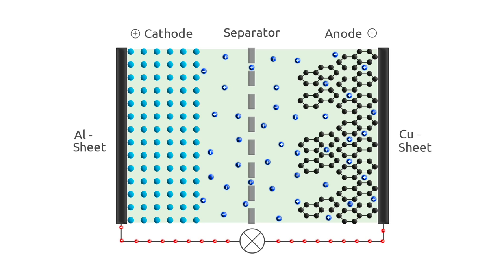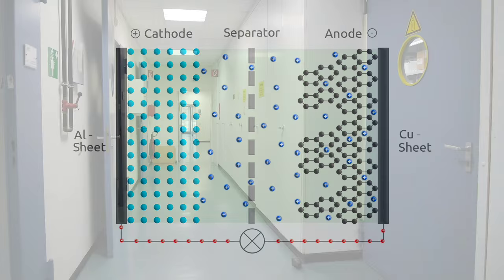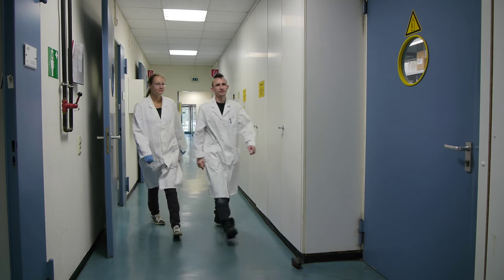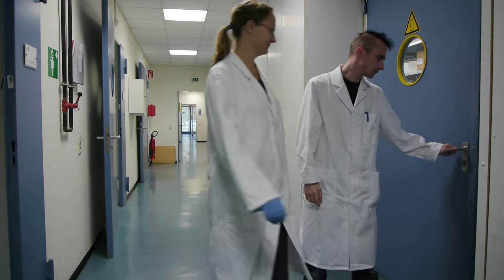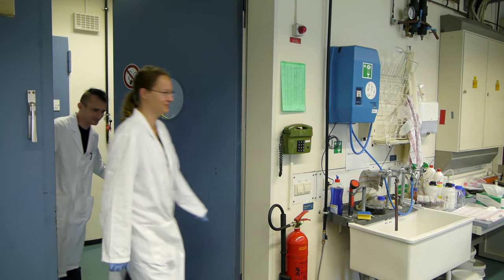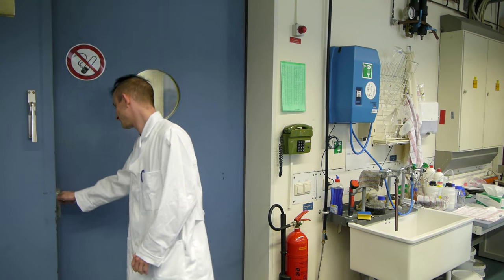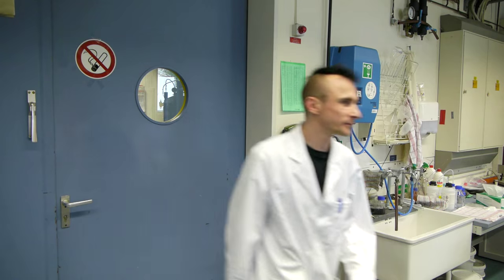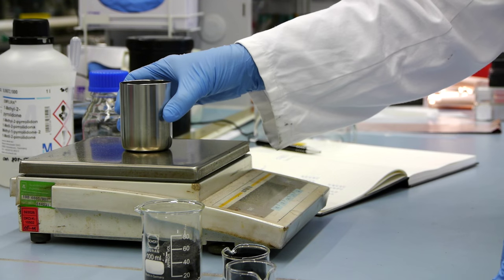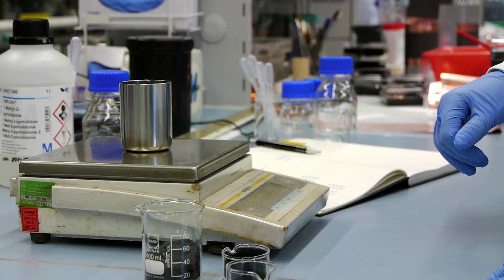Performance and service life of the cell largely depend on material properties and processing techniques, which presents a challenge for the scientists working at the Institute for Applied Materials at the Karlsruhe Institute of Technology. They are producing laboratory samples of cells wrapped in plastic foil, so-called pouch cells.